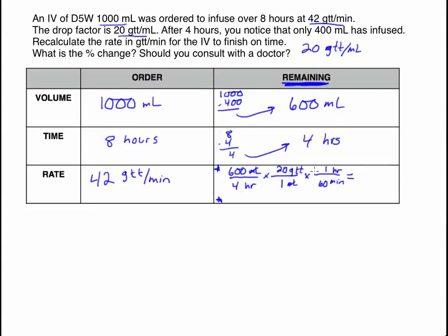So plugging this into the calculator: 600 times 20 divided by 240 gives us exactly 50. We don't have to round anything — that's exactly 50 drops per minute.